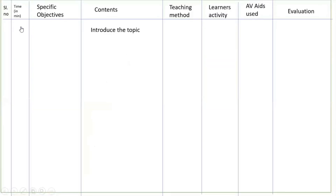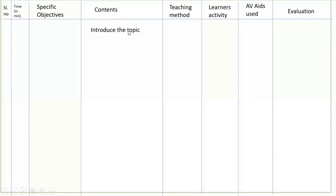This is the format you have to follow for writing the lesson planning. First is the serial number, and then time in minutes. The common time is 45 minutes — you must manage and complete within this schedule. For serial number one, take two minutes to introduce the topic — write the introduction about personal hygiene.